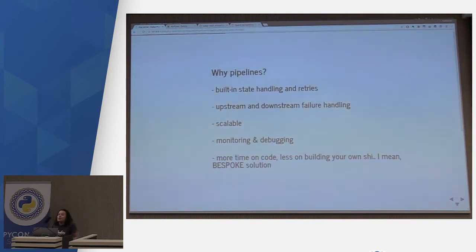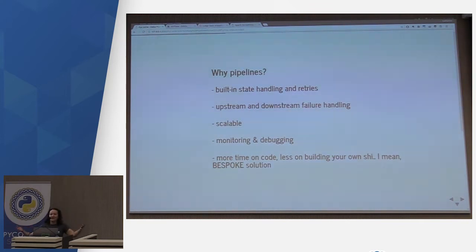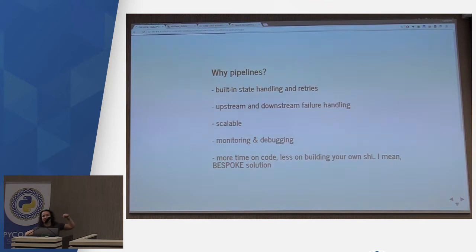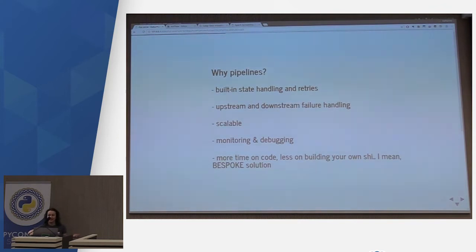A few more reasons to use pipelines: if you're handling and managing data, there are a lot of problems that can happen. We try to make things as boring as possible, so use a framework to do the hard stuff. Most data pipeline frameworks have built-in state handling and idempotency, which means you don't have to think about whether you ran something once or twice and ended up with duplicate data. The framework manages all of that for you — that's not a problem you want to try to fix yourself unless it's a core competency of your product.